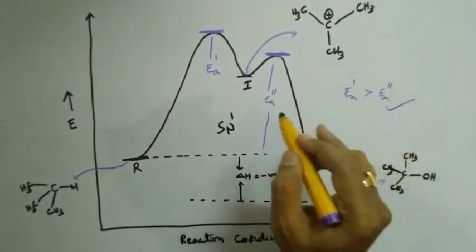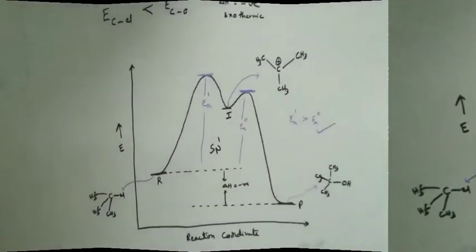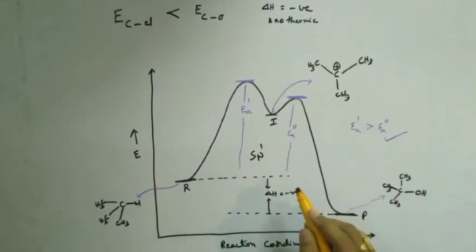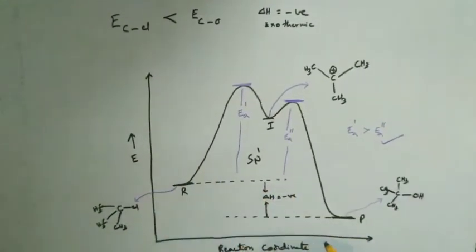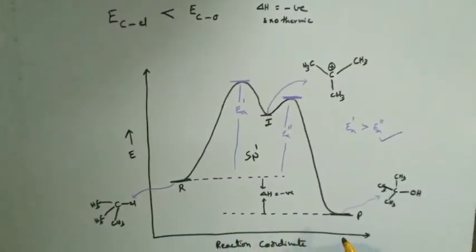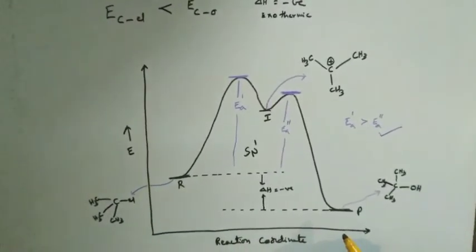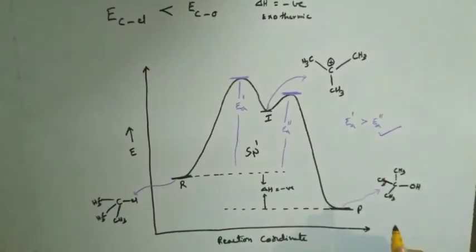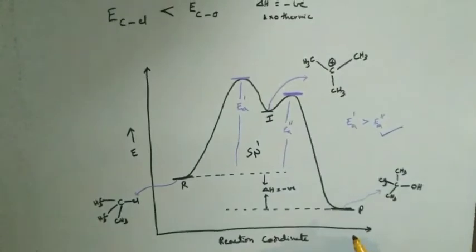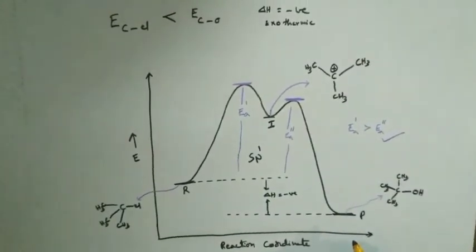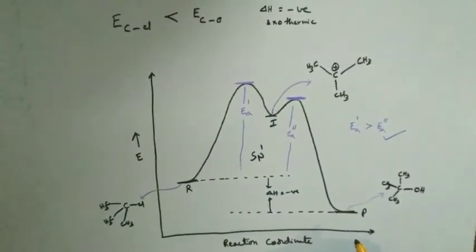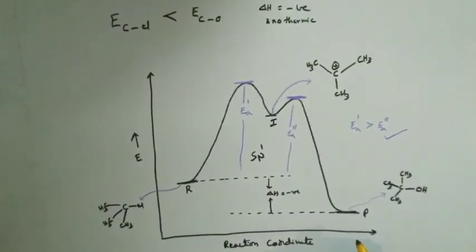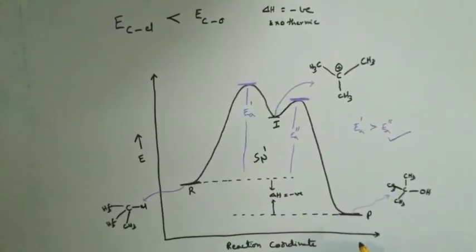Until now we have seen the mechanism of SN1 reaction, the energy profile diagram, and the different reactions given by alkyl halides in this module. In our next module, we are going to cover the factors affecting SN1 reaction and also very important critical examples of SN1 reaction involving ring expansion, rearrangement, and optical activity.